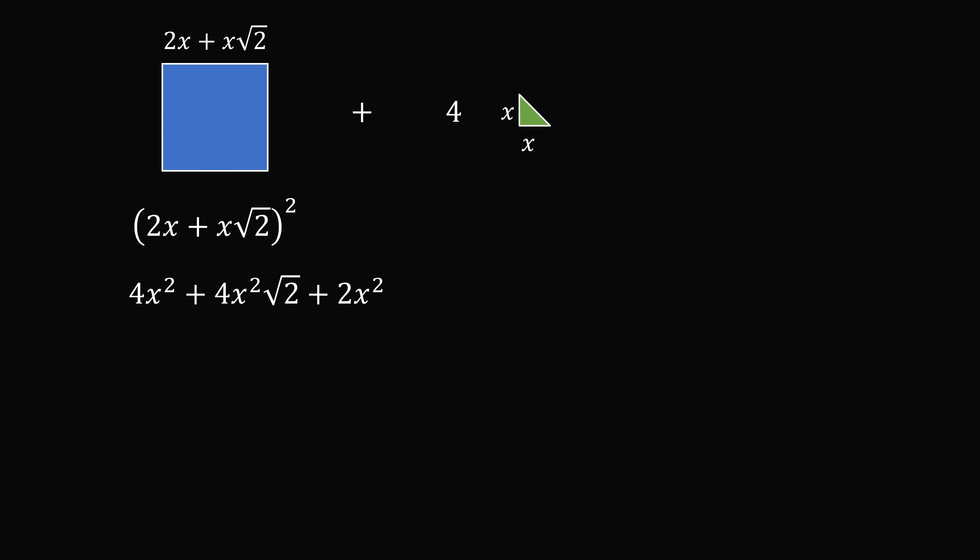This equals 4x squared plus 4x squared root 2 plus 2x squared. This simplifies to be 6x squared plus 4x squared root 2.